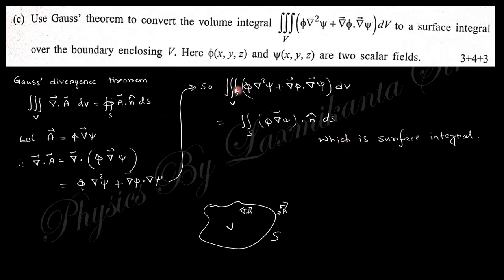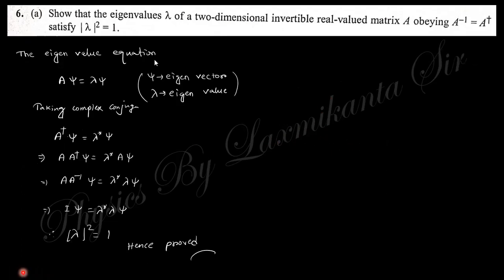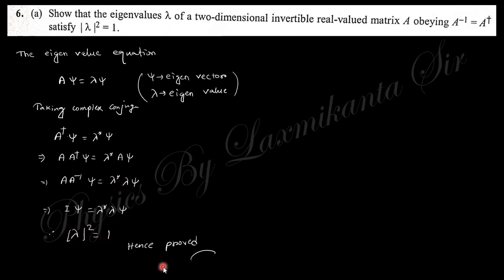The next part: show that the eigenvalue λ of a two-dimensional invertible matrix A satisfying A⁻¹ = A† satisfies |λ|² = 1. Starting from the eigenvalue equation, taking the complex conjugate, then multiplying by A on both sides and using the identity matrix, we obtain |λ|² = 1. This proves the result.